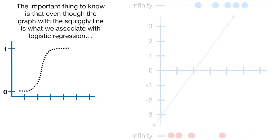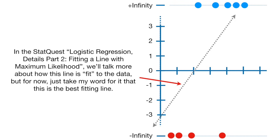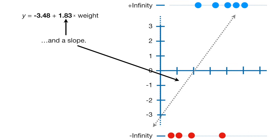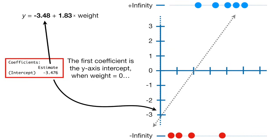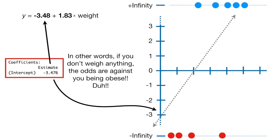The important thing to know is that even though the squiggly line graph is what we associate with logistic regression, the coefficients are presented in terms of the log odds graph. Just like with linear regression, the best fitting line has a y-axis intercept and a slope. The first coefficient is the y-axis intercept when weight equals 0, meaning that when weight equals 0, the log of the odds of obesity is negative 3.476. In other words, if you don't weigh anything, the odds are against you being obese.